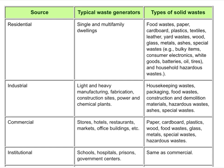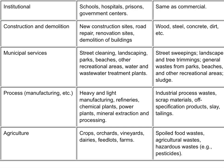2. Commercial: stores, restaurants, markets, office buildings, hotels, print shops, medical facilities and institutions, etc. Waste types include food waste, rubbish, ashes, demolition and construction waste, special waste, and originally hazardous waste.